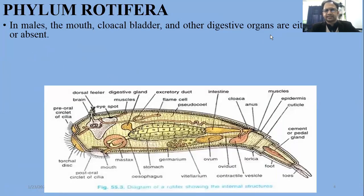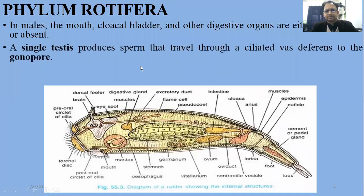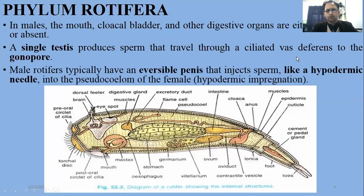The vitellarium will secrete the yolk portion of the egg. There is a cloacal bladder and digestive organs, which are either reduced or absent. Males have single testes which produce sperm.